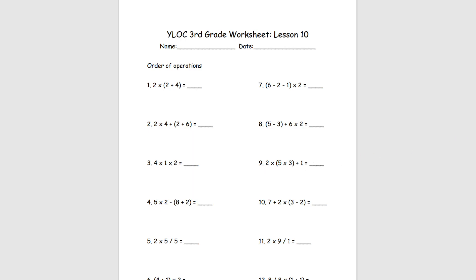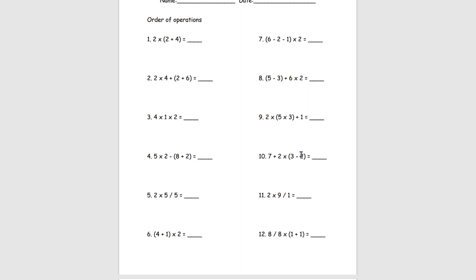Welcome to Wi-Log Third Gear Worksheet Lesson Number 10. To start off on this first page we will be doing Order of Operations. Order of Operations is basically 6 different steps that you have to do in order to solve problems.